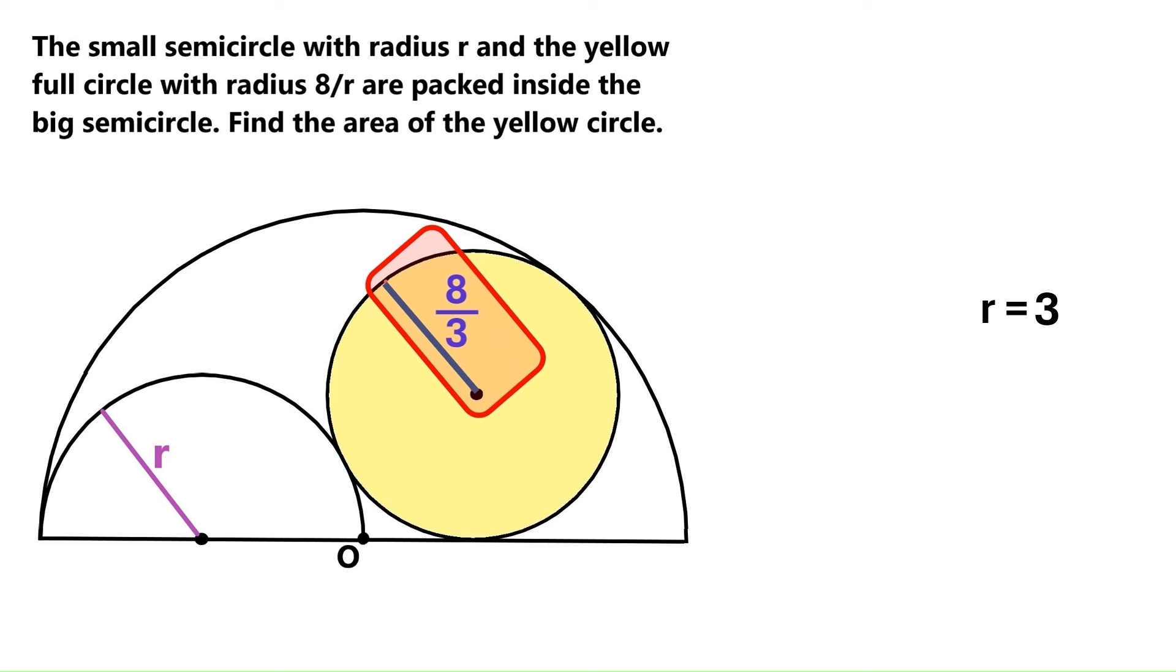It's 8 over 3. And now my son will find the area of the yellow circle. You always ask the circle. Come on, son. Go ahead and do it. Hello, people.